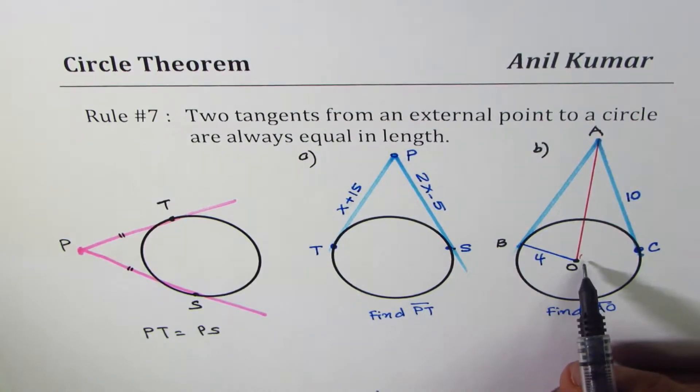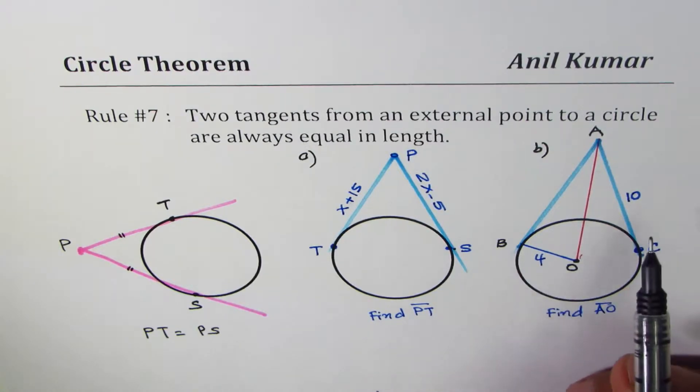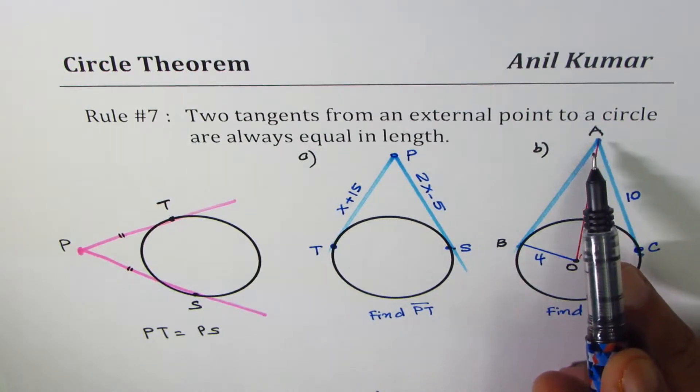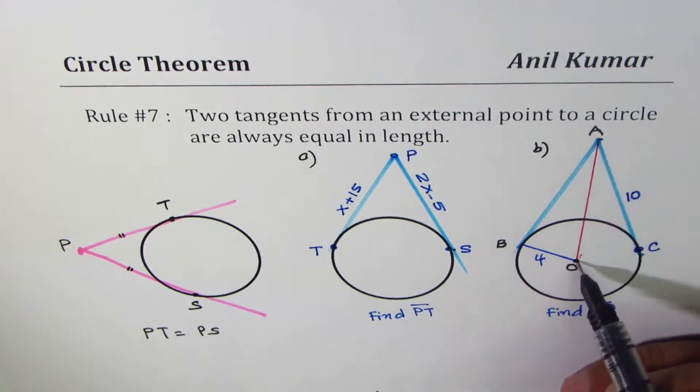In part B, you are given the radius, 4, and length of one of the tangents as 10 from an external point A to the circle O. You need to find AO, A to O.